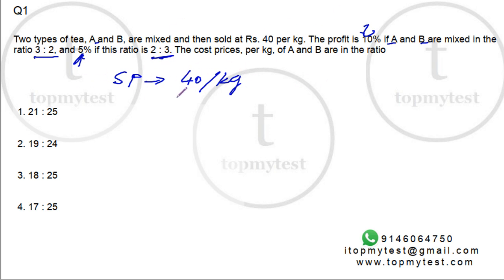Now because the selling price is the same, let's try to figure out everything in terms of sales price. Three kilos of A plus two kilos of B. This is sold at 10% profit.